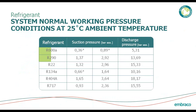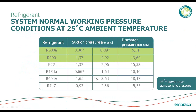So for R404A, basically your compression ratio at low temperature — assuming minus 20°F suction and plus 20°F condensing — would be 18.17 divided by 1.65, which is about 12 to 1. And R290 is significantly lower at about 9 to 9.5 to 1.